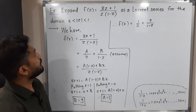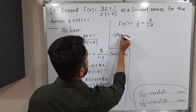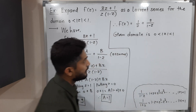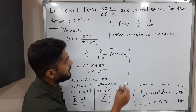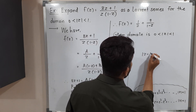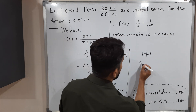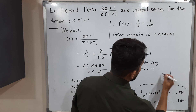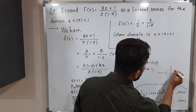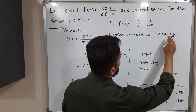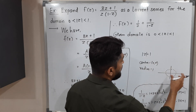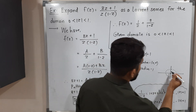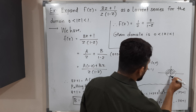The given domain is 0 < |z| < 1. Replacing the inequality with equality, |z| = 1 gives a circle centered at the origin with radius 1. The region |z| < 1 is the interior of this circle, and since |z| > 0 strictly, the center is removed — giving a punctured disk.